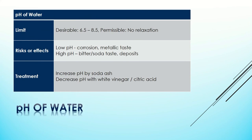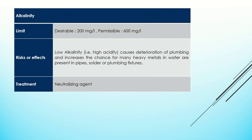pH of water: the acceptable or desirable limit set for pH of water by the Bureau of Indian Standards is 6.5 to 8.5, and there is no relaxation. We can reduce this problem by increasing pH using soda ash or decreasing pH with white vinegar.